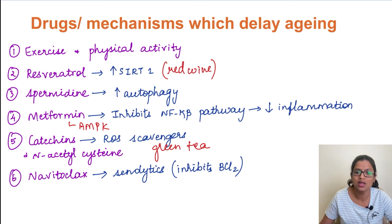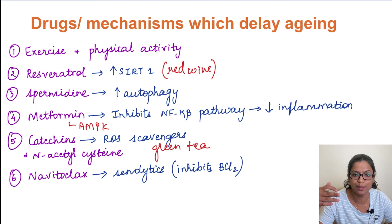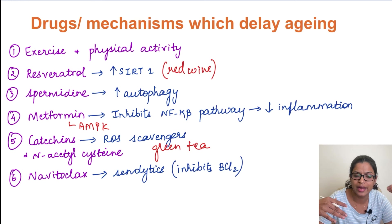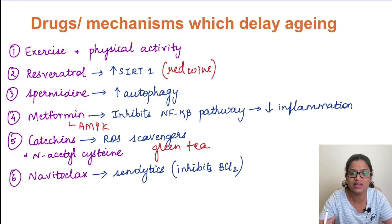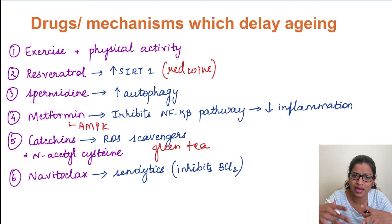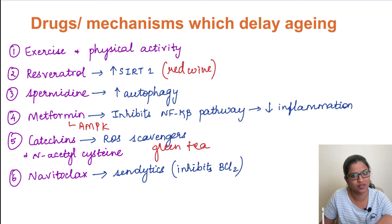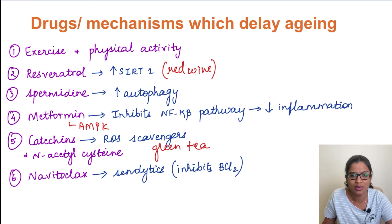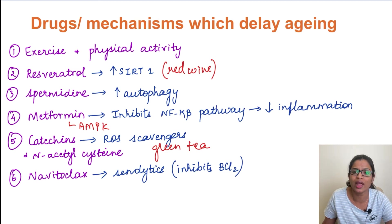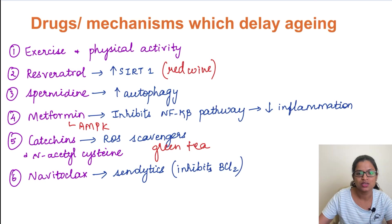There is also something called senolytics — drugs which help in removing senescent cells. Normally when senescent cells are present, they tend to induce senescence in surrounding cells by a bystander effect, and senescent cells accumulate over time, decreasing functionality of the cell and organ. To prevent that, we remove senescent cells with the help of senolytics. One example is navitoclax, which acts by inhibiting BCL-2. Since BCL-2 is an anti-apoptotic protein, when it is inhibited, it promotes apoptosis of these senescent cells.